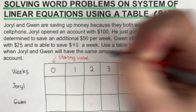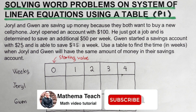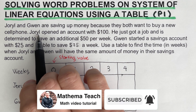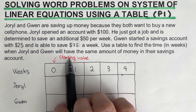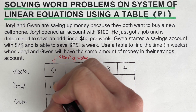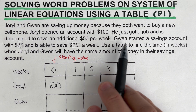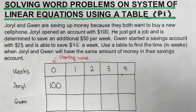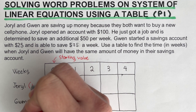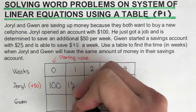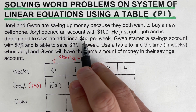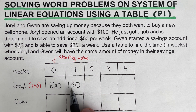Going back to the problem, let's start with Joriel. Joriel opened an account with $100, so the starting value on Joriel's savings account is $100. It says he is determined to save an additional $50 per week, so we are going to add $50 every week. From $100 as the initial value, after the first week the total would be $150, because $100 plus $50 equals $150.